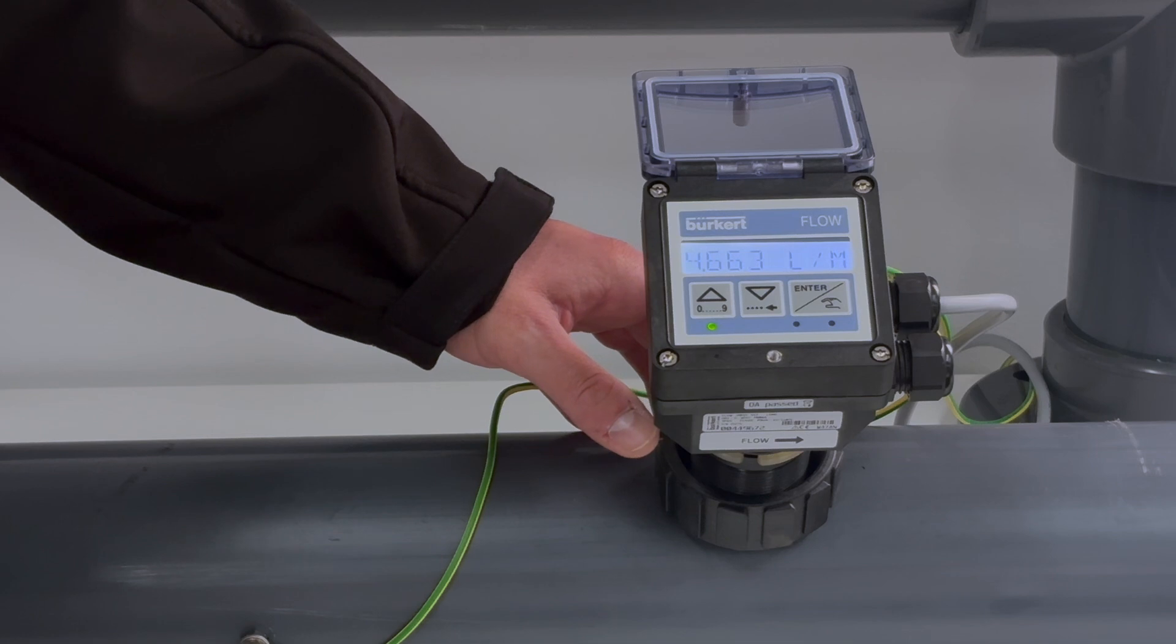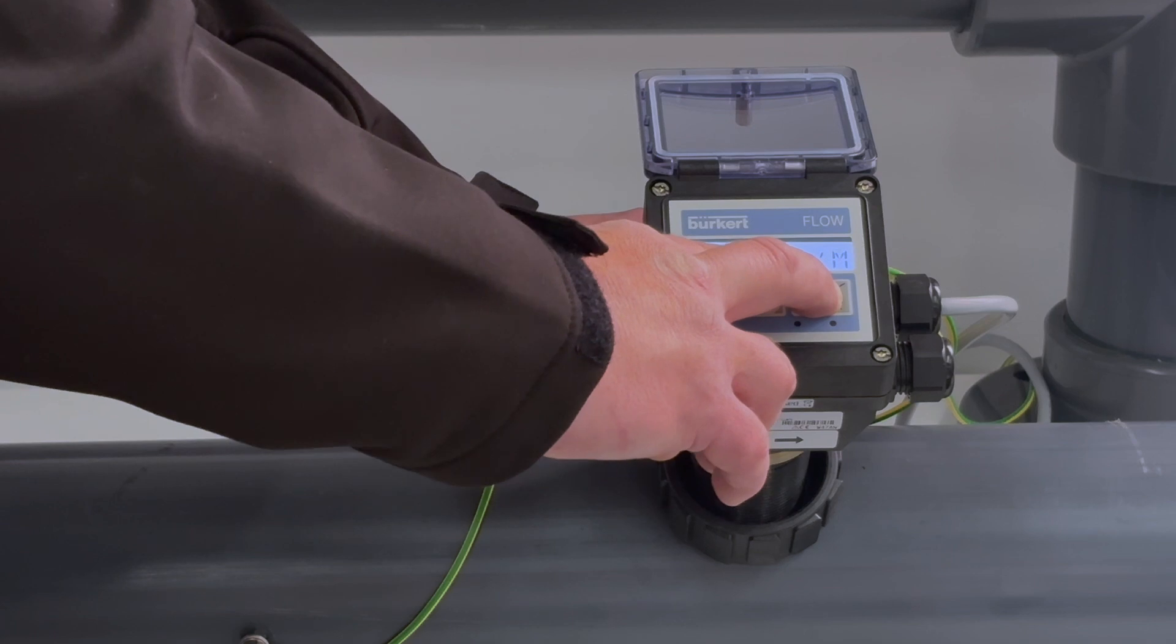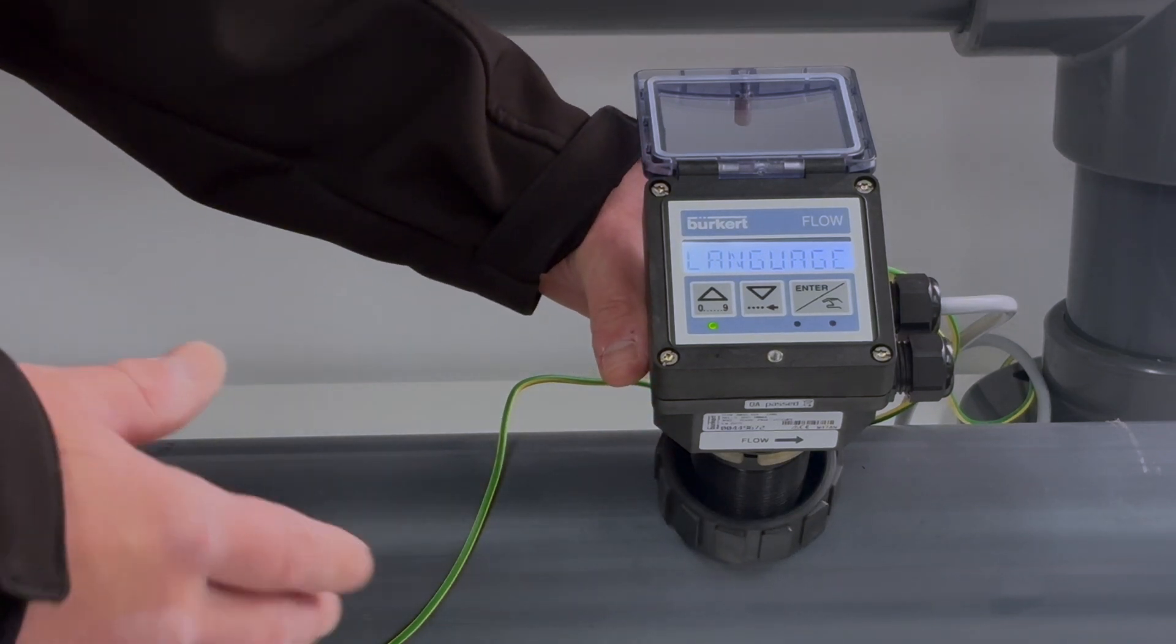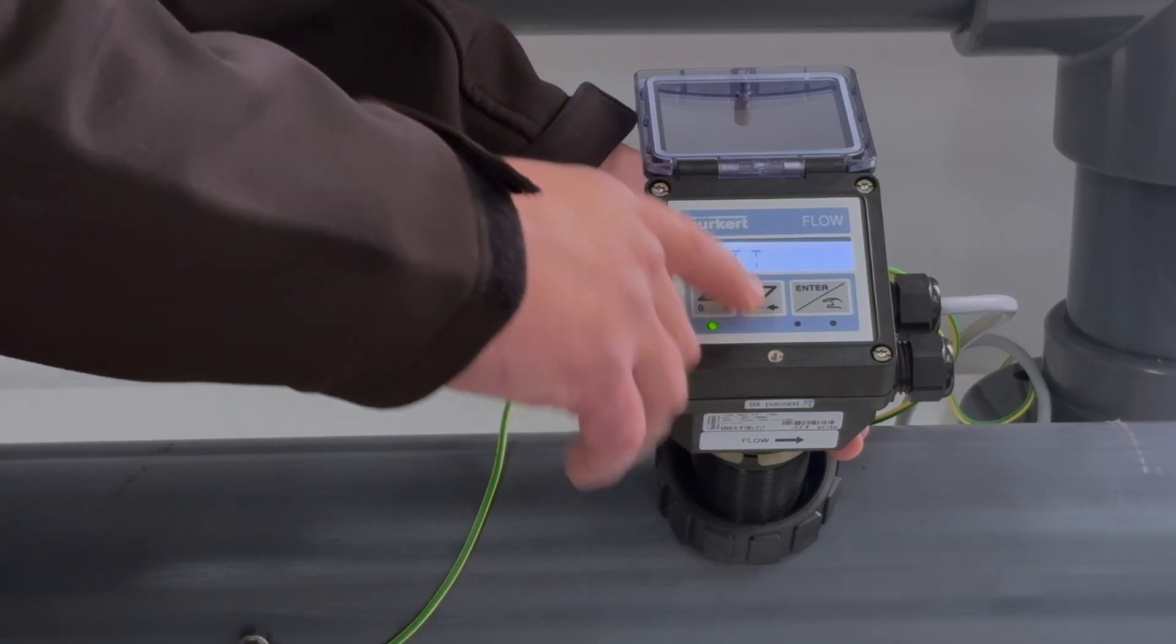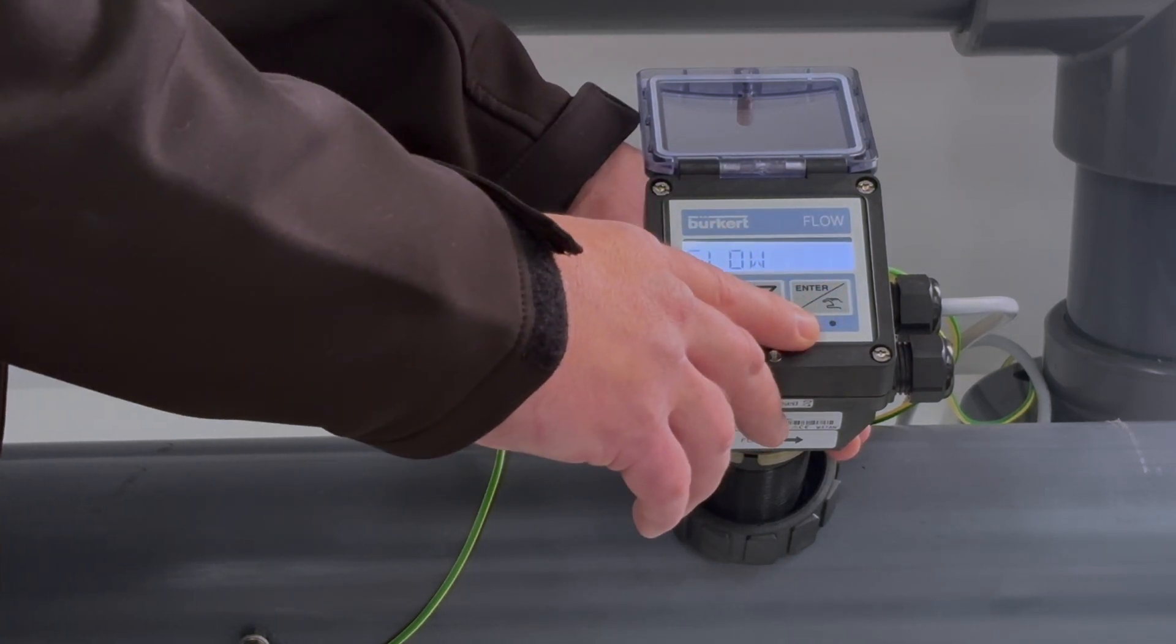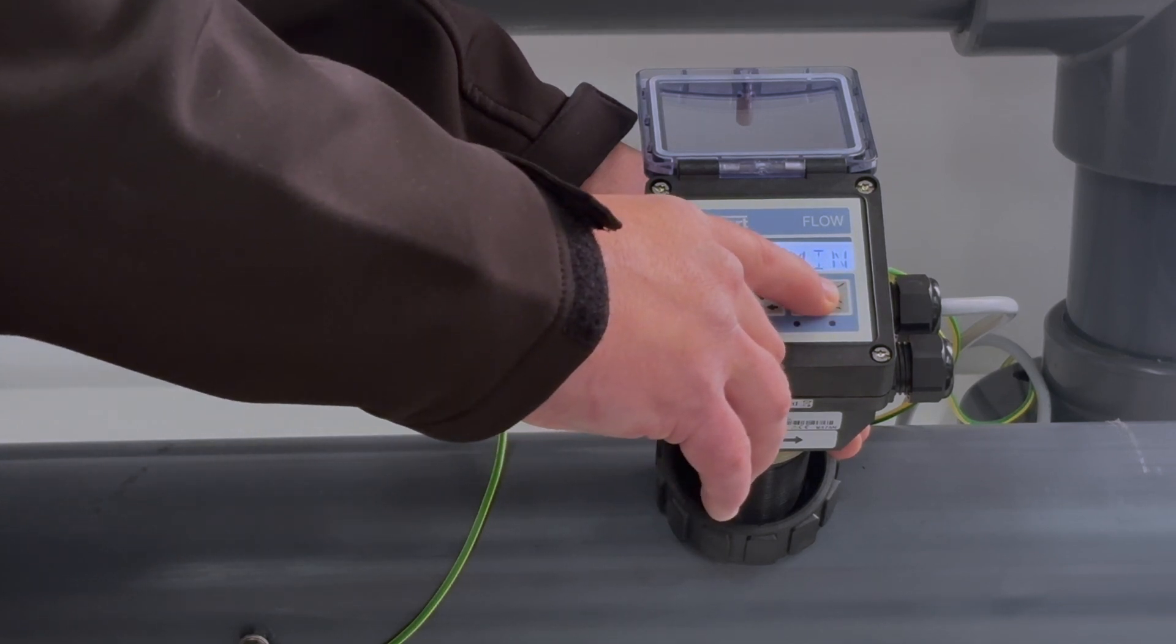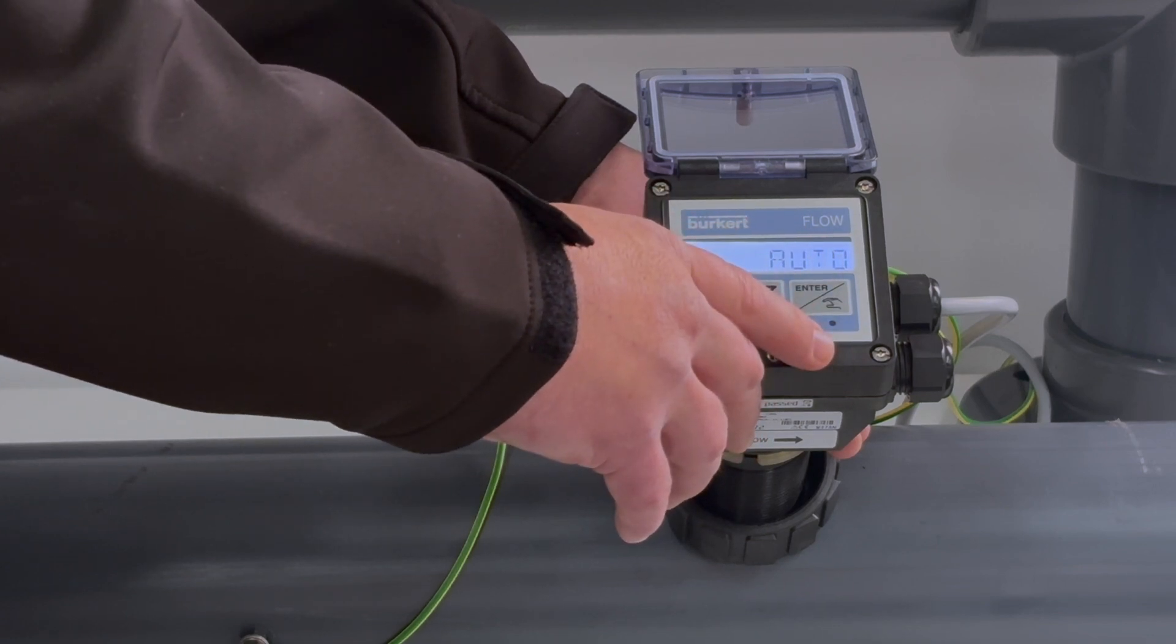Now we'll set up the menu items in the parameters menu. To enter the parameters menu we press and hold the middle and right button for five seconds, and we'll go through the main items which are important for a successful install. Language is set to English in this case. We press down to unit and set our unit. Our unit for flow will be set in liters per minute. I'll verify by pressing enter and do an automatic decimal point in this case.